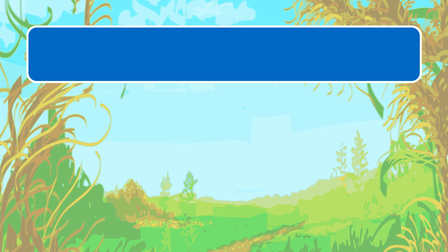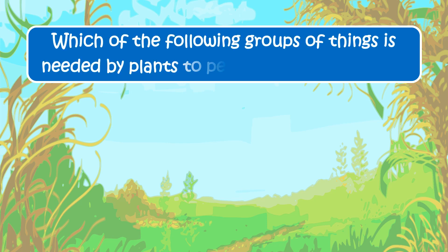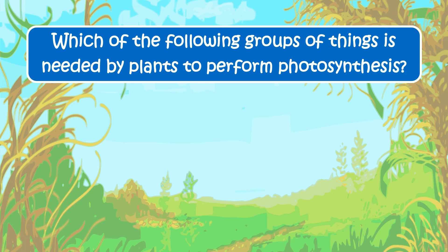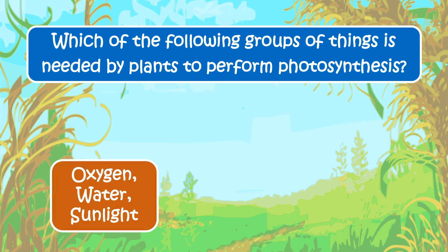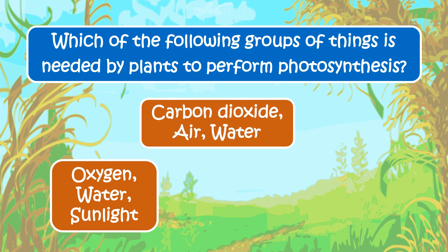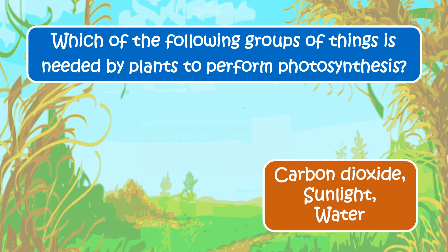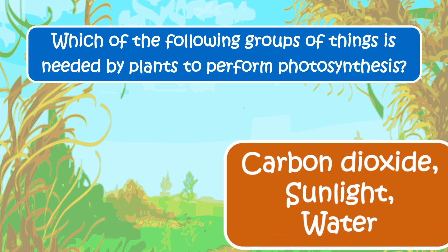The next question is: which of the following groups of things is needed by plants to perform photosynthesis? Your options are: oxygen, water and sunlight; carbon dioxide, air and water; or carbon dioxide, sunlight and water. The right answer is carbon dioxide, sunlight and water.